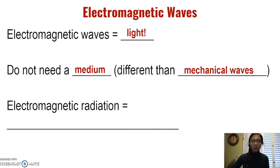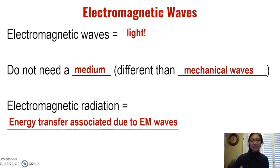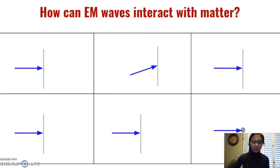Many of you have heard the phrase electromagnetic radiation, so let's define what that is. Electromagnetic radiation is the energy transfer associated with electromagnetic waves or EM waves. Given that energy transfer can occur between different objects, let's see the different ways that EM waves can interact with matter.